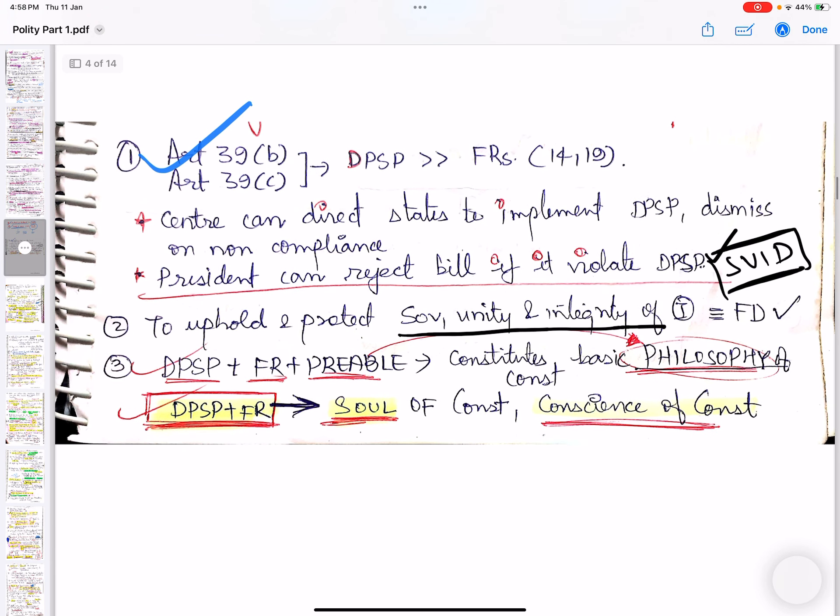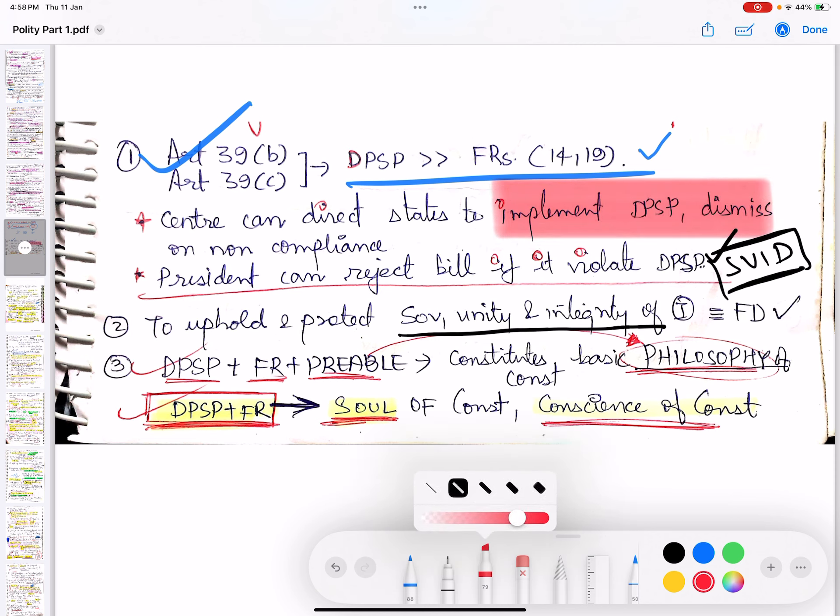Article 39(B) and (C). Can the Center direct the states to implement the DPSP and dismiss them if they don't follow? The answer is yes, this is the right thing.